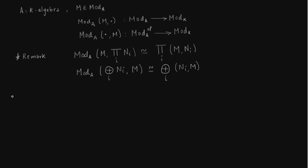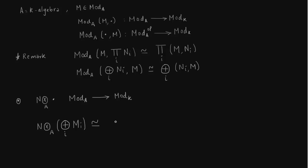Similarly we talk about tensor product functors. We fix N as a module over A and use the property that tensor product commutes with direct sum. The tensor product carries modules over A, where A is a K-algebra, to modules over K, and the tensor product commutes with direct sum.